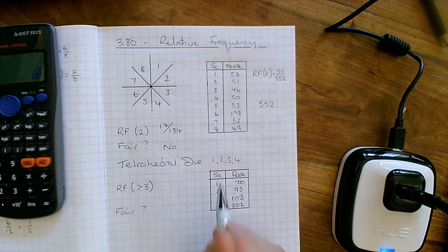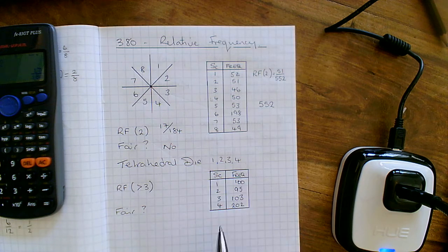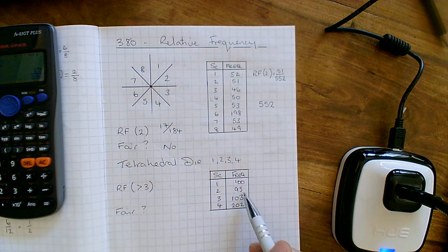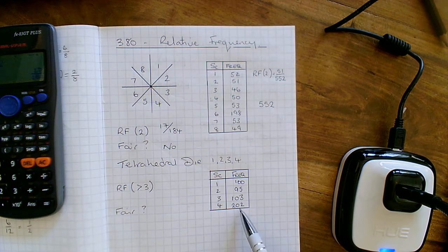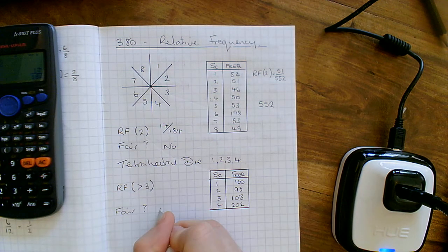Next question. So I've got a tetrahedral dice. Dice is just one dice. It's got the numbers 1 to 4 on it. We spin it. We've got 100 there, 95 there, 103 there. Sounds good to me. 202. Hang on a minute. Why is the number 4 twice as likely in everything else? So is it fair? I'm going to go with no.